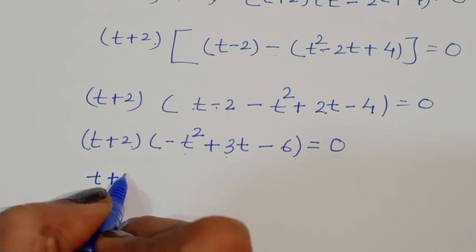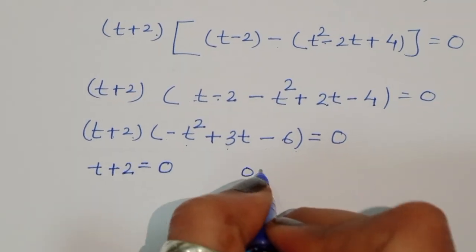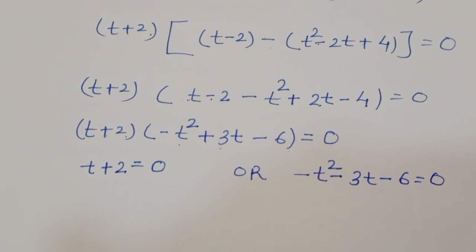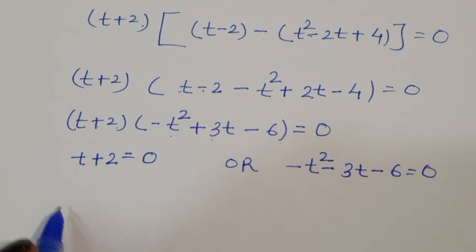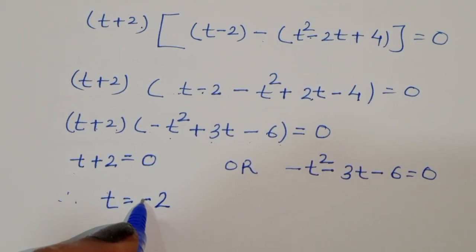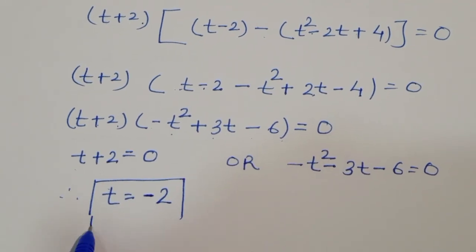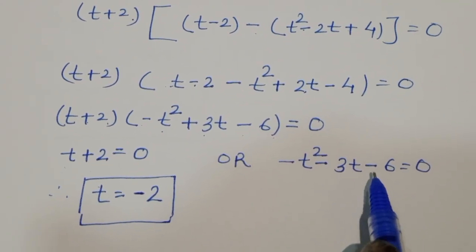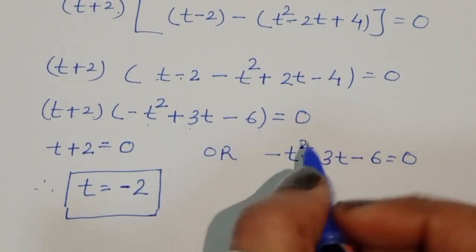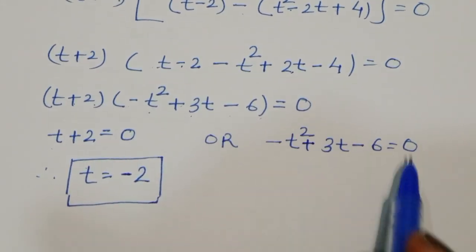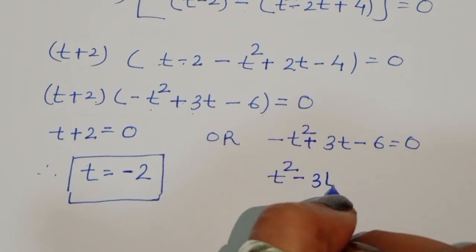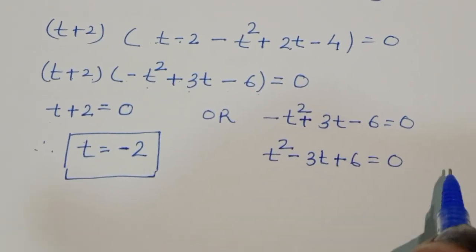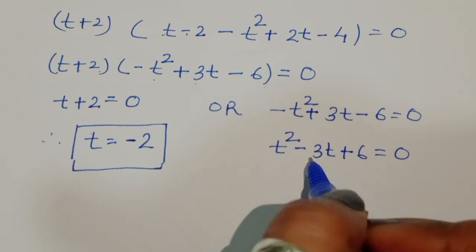From t plus 2 equals 0, we get t equals minus 2. For the second equation, minus t squared plus 3t minus 6 equals 0. Multiplying through by minus 1 gives t squared minus 3t plus 6 equals 0. The coefficients are: a equals 1, b equals minus 3, and c equals 6.